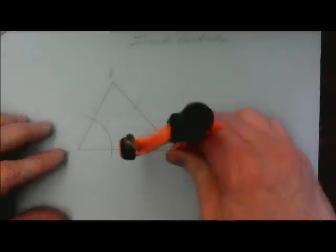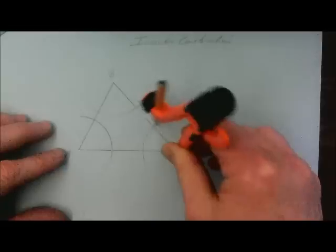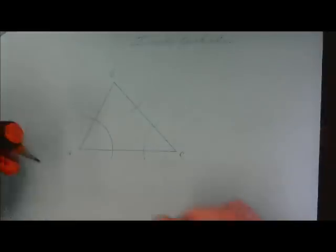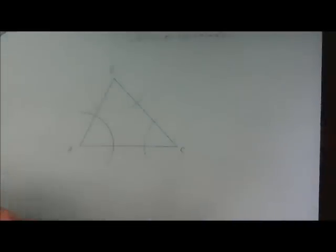Now, each of those arcs intersects both sides of the angle, and then those become stop points for which to create the rest of the angle bisector.